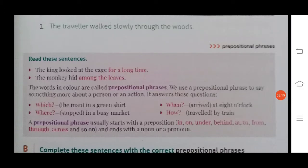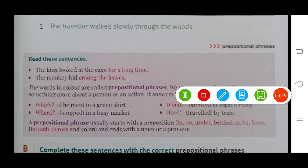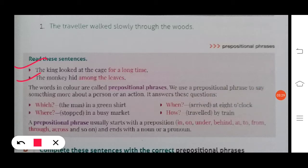Read these sentences. The king looked at the cage for a long time. The monkey hid among the leaves. The words in color are called prepositional phrases. Preposition has been used in the phrases, so it is a prepositional phrase—prepositions like for and among. We use a prepositional phrase to say something more about a person or an action. It answers these questions like which, where, when, and how.